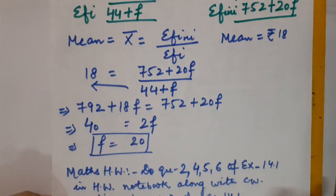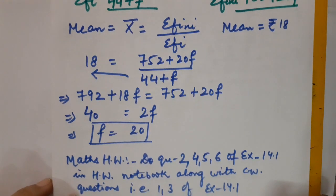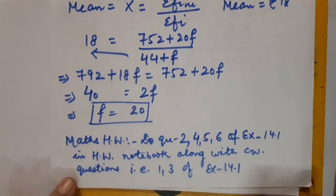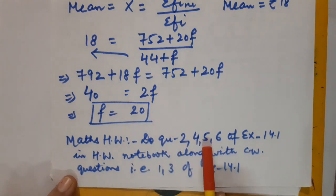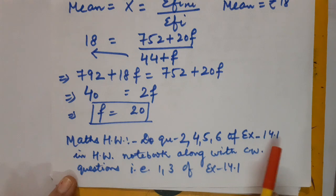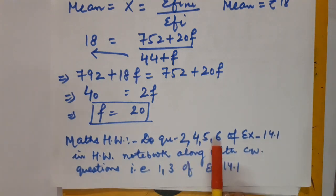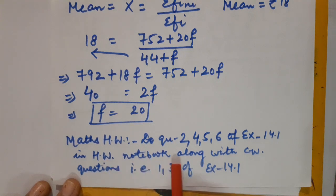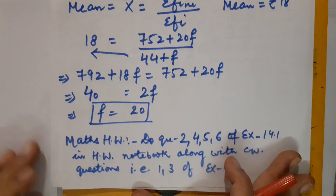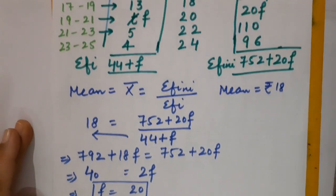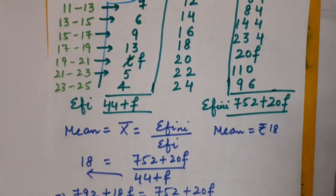This was all about the direct method of calculating mean. Now for your mathematics homework: do questions 2, 4, 5, and 6 of exercise 14.1 using the direct method — along with classwork questions 1 and 3 of exercise 14.1. That's it for the day. Thank you and have a nice day. Please like the video and do not forget to subscribe to our channel.